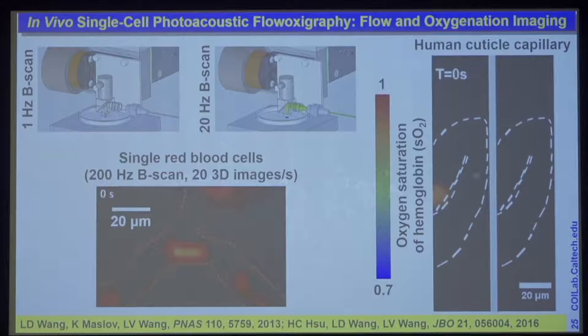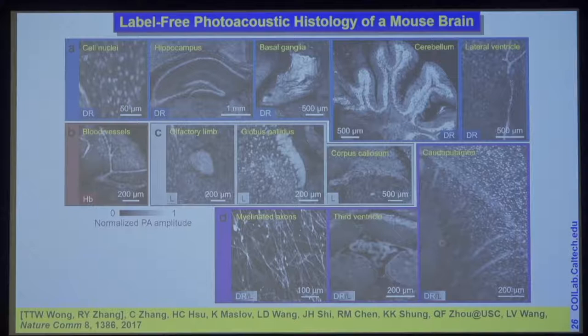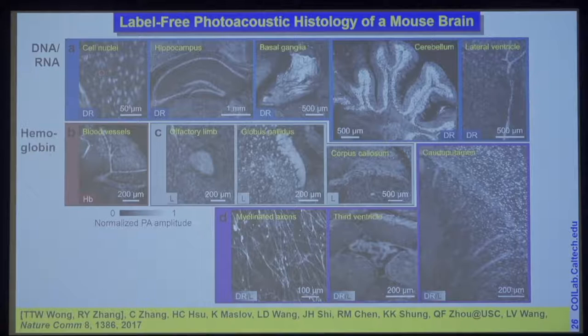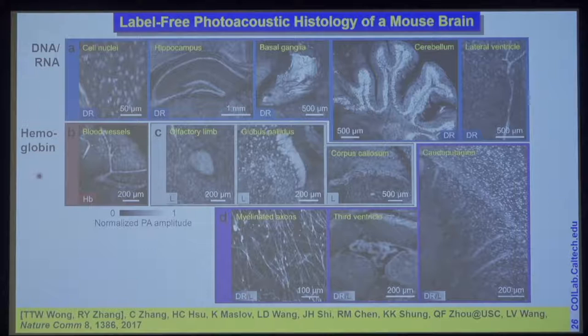We can also use ex vivo techniques to get very fine resolution of all sorts of other contrasts. So far I've mainly demonstrated hemoglobin contrast, but you can target different absorbers inside a tissue. For example, we can even see cell nuclei — very much like H&E staining, but we don't stain at all; we use endogenous DNA and RNA absorption as the contrast. We can provide histology-equivalent images. This simultaneously provides hemoglobin contrast so you can see blood vessels quite well, and lipid contrast. A combination of multiple contrasts can also reveal axons.